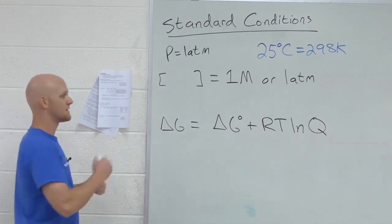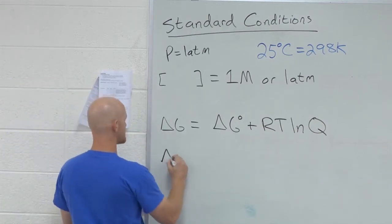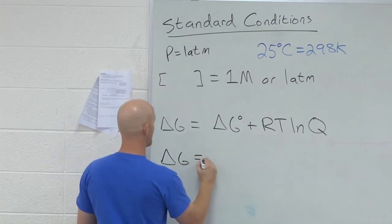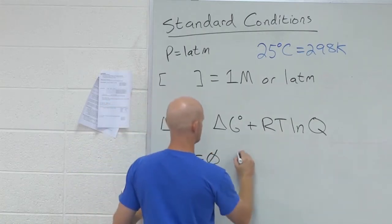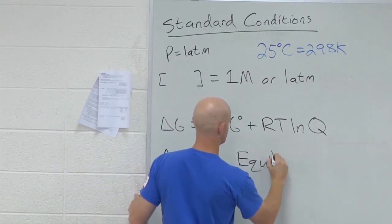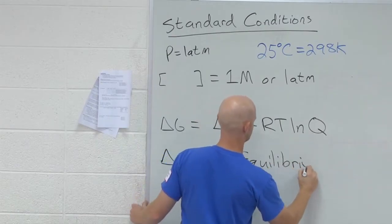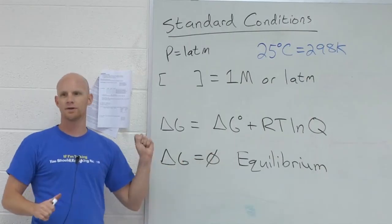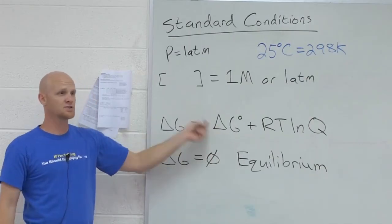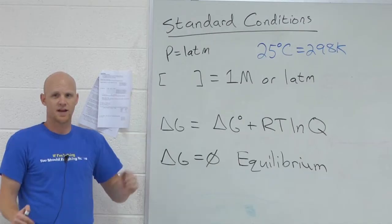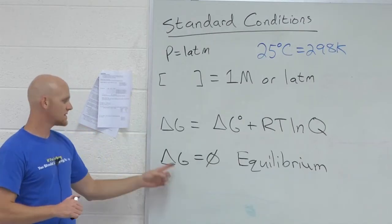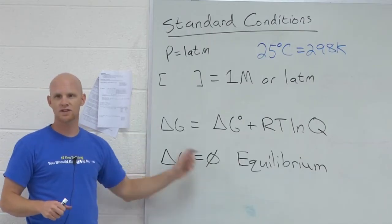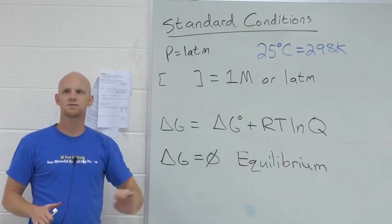So in this case, it's when delta G, not standard value, it's when the non-standard value is going to hit zero. That's when you're at equilibrium. The standard value is what it is. You look it up in a book. It doesn't change for a given temperature. It's the non-standard value that's going to eventually reach zero once you've reached equilibrium.